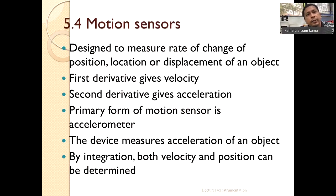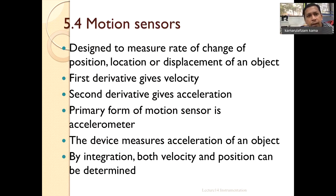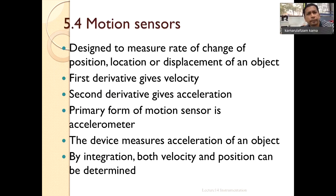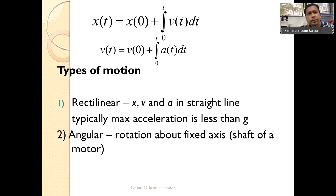The accelerometer is basically a function sensor. It is designed to measure change in position, location, or even displacement of objects attached to it. The first derivative of this device is velocity and the second derivative is acceleration. It is a motion sensor sensitive to motion and vibration — it gives you position, acceleration, and velocity.